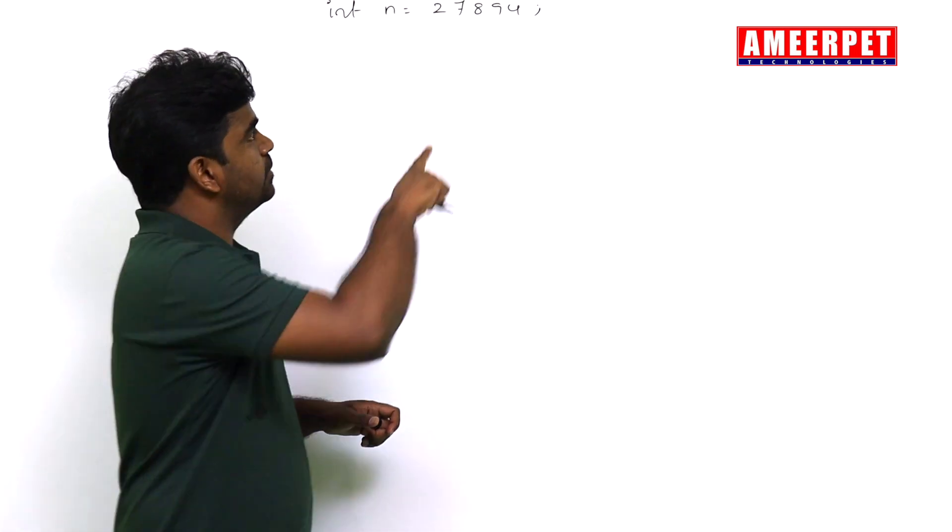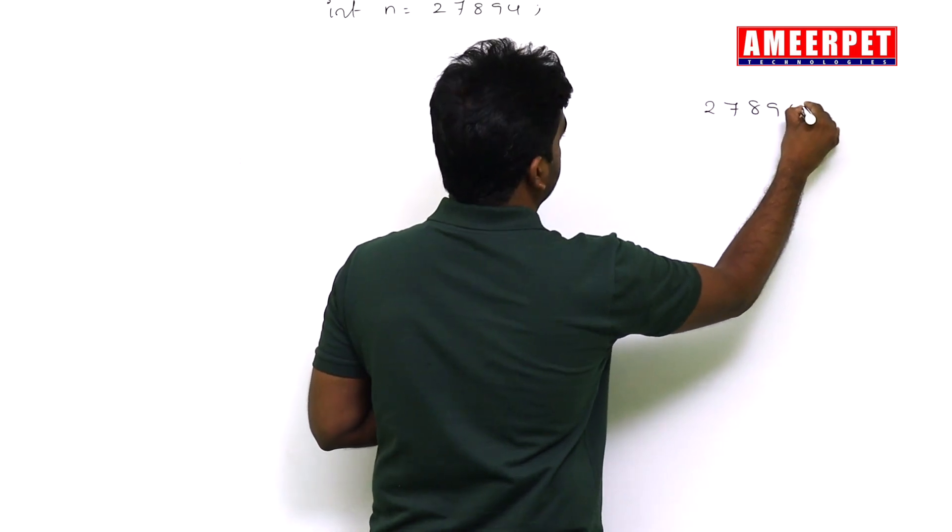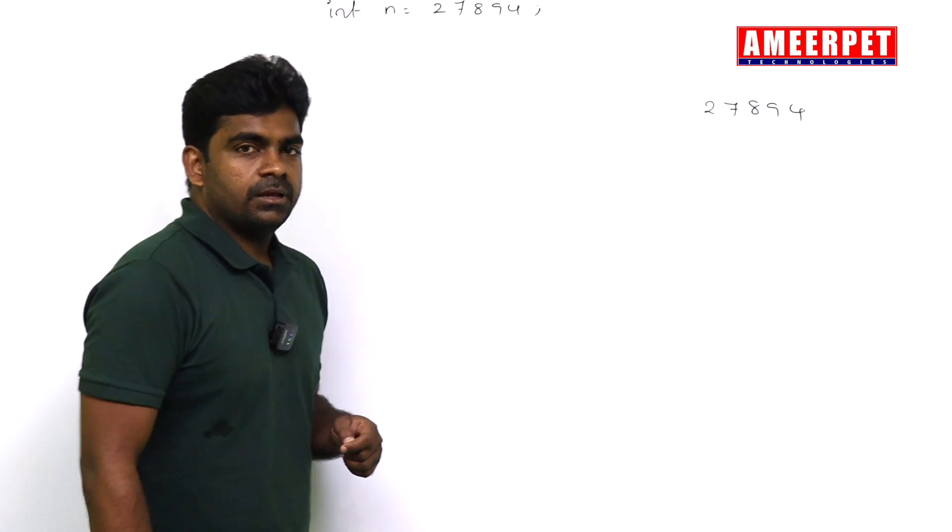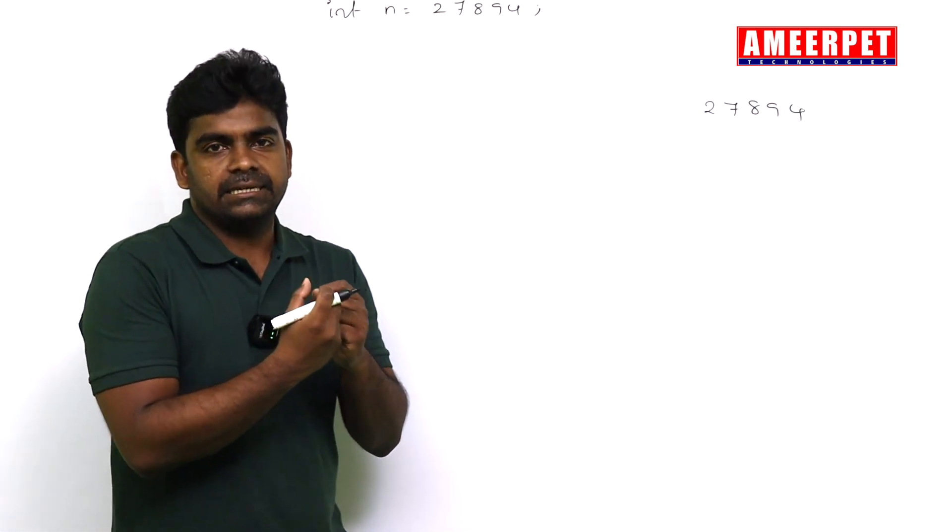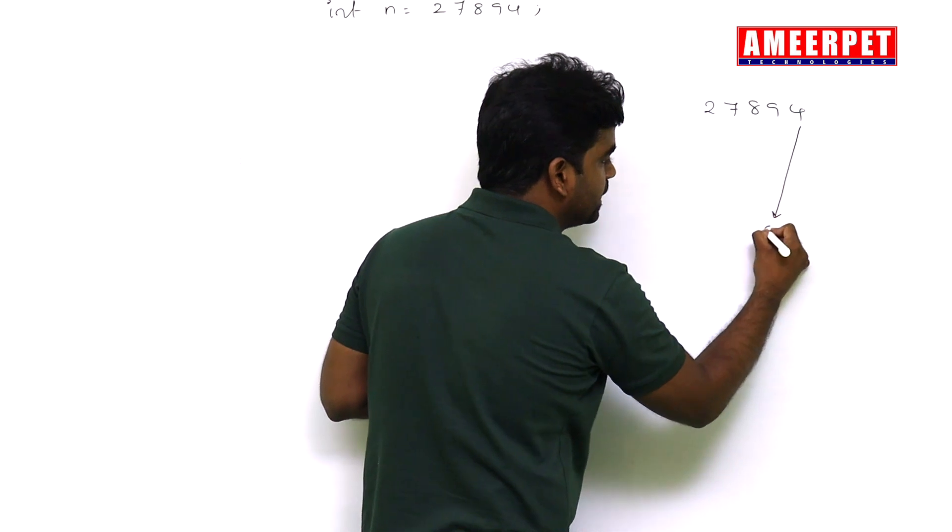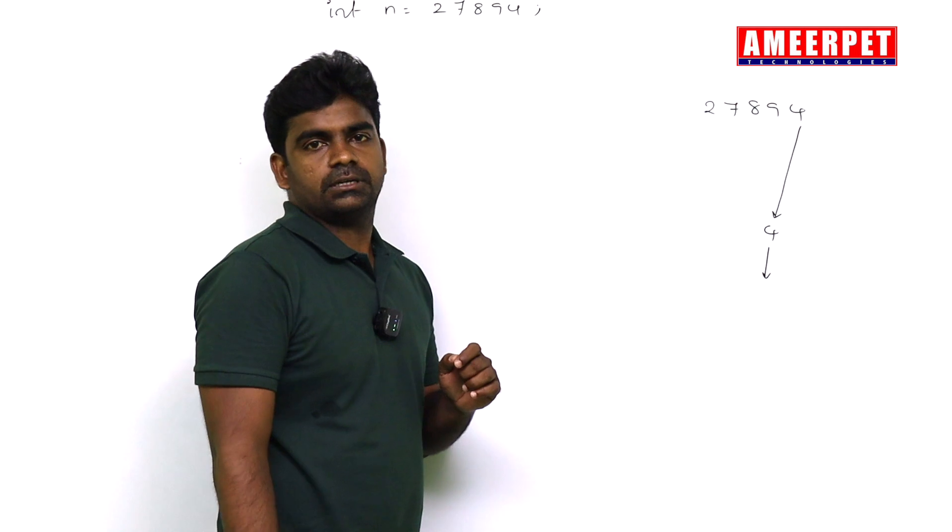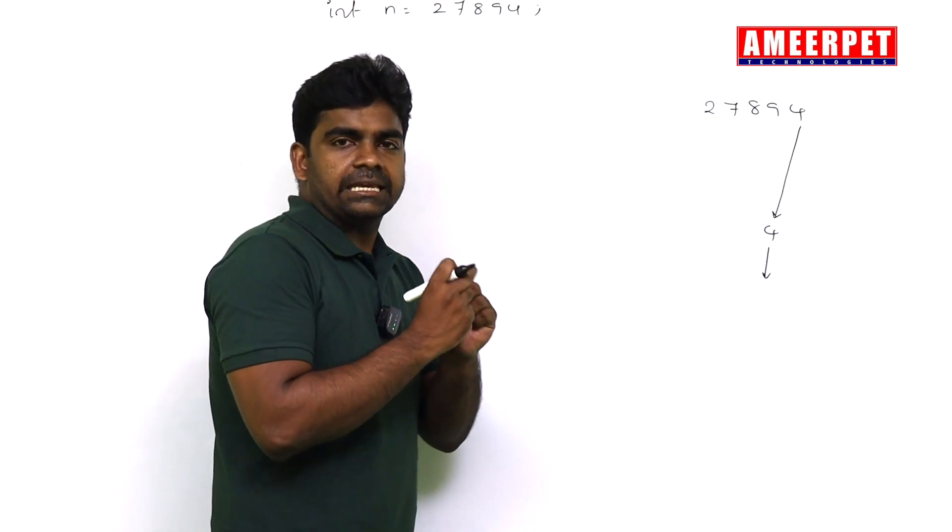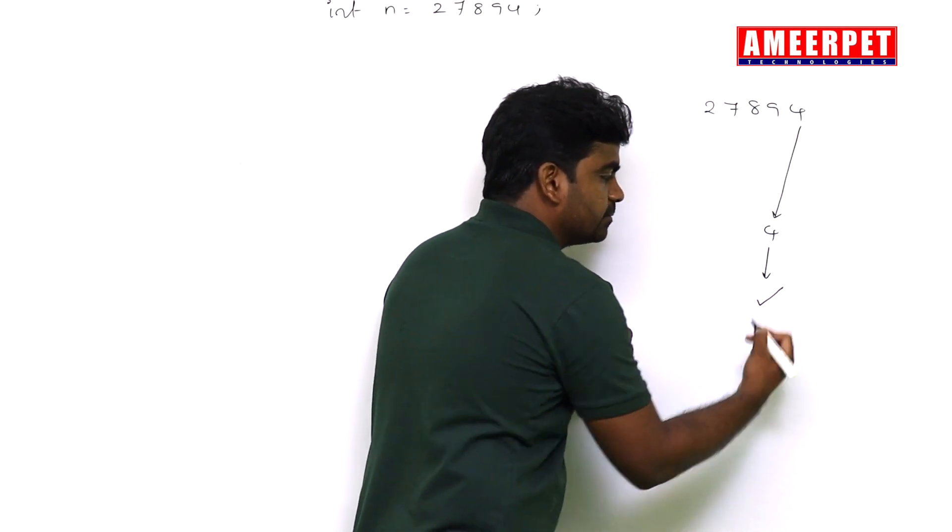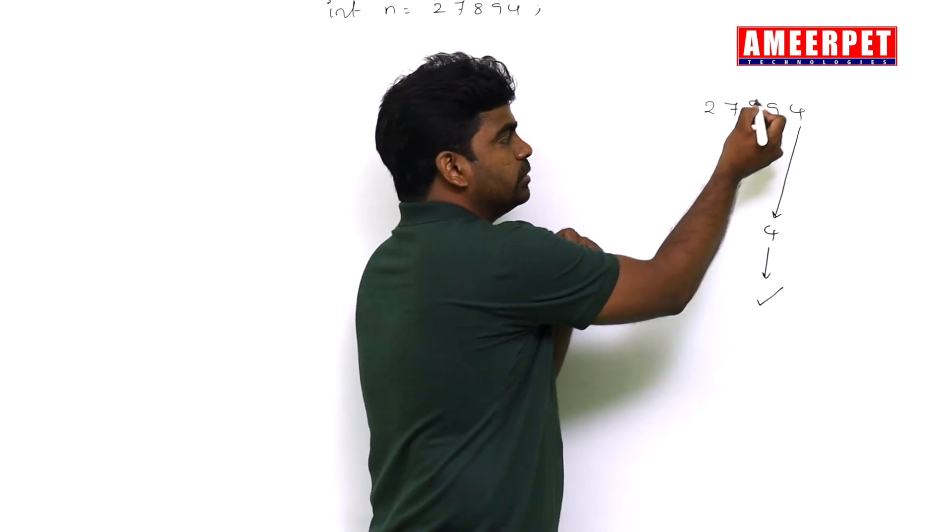How to find this is very simple. Suppose I'm taking the same number 27894. Get digit by digit. First, get the digit. After getting the digit, check if the digit is even or not. If it is even, then print it. After working with the digit, remove